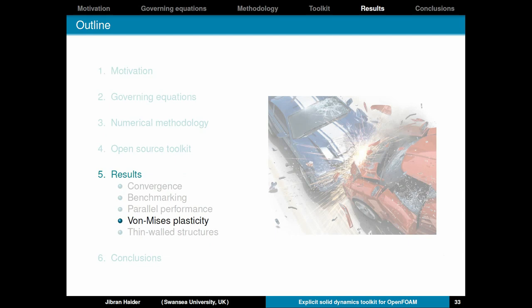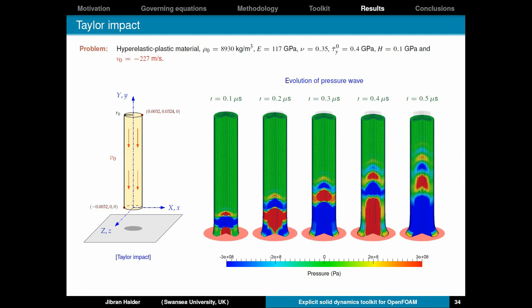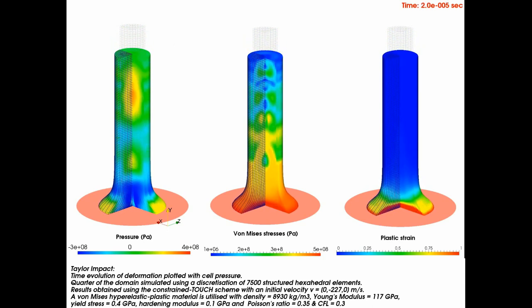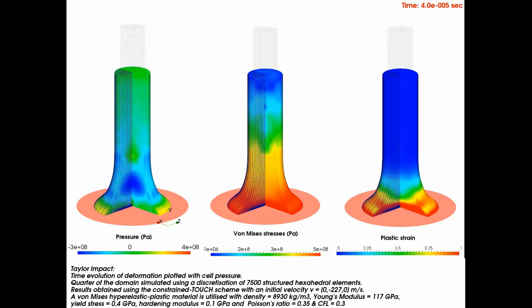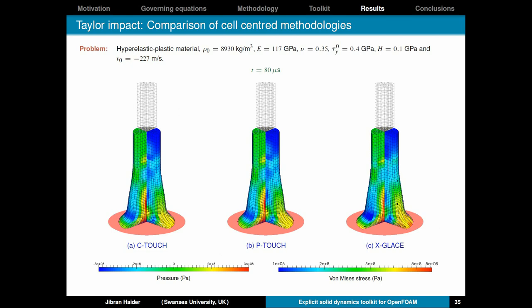Now I'll talk about von Mises plasticity as well. So we have a benchmark problem in literature. Which is this Taylor impact problem. So you have a copper bar which is impacted against the surface at a very high velocity of 227 meters per second. And what you see is this evolution of the pressure wave in the initial deformation phases. This is something which is very difficult to capture and we have been able to capture this. So let's have a look at the simulation. So on the left you have the pressure distribution. In the middle are the von Mises stresses. And on the right is the plastic strain in the domain. Again the results show no pressure oscillations. And no locking at all.